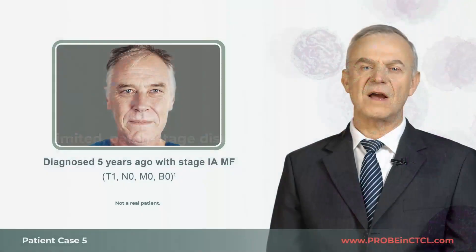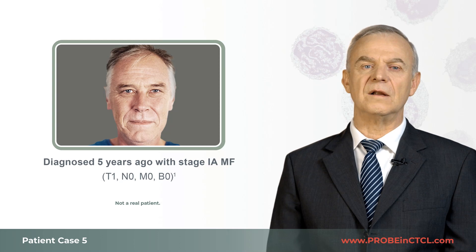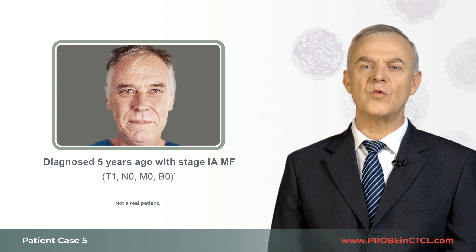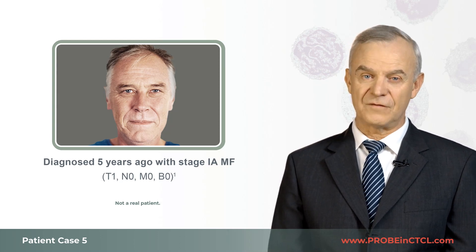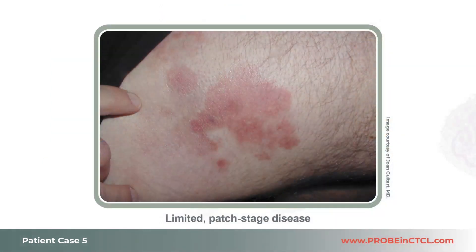Patient 5 is a 50-year-old male. He was initially diagnosed with stage 1a mycosis fungoides five years ago. At initial presentation he had patch lesions affecting approximately five percent of body surface area. Lymph nodes were normal on palpation and CBC was normal as well, with no signs of lymphocytosis.